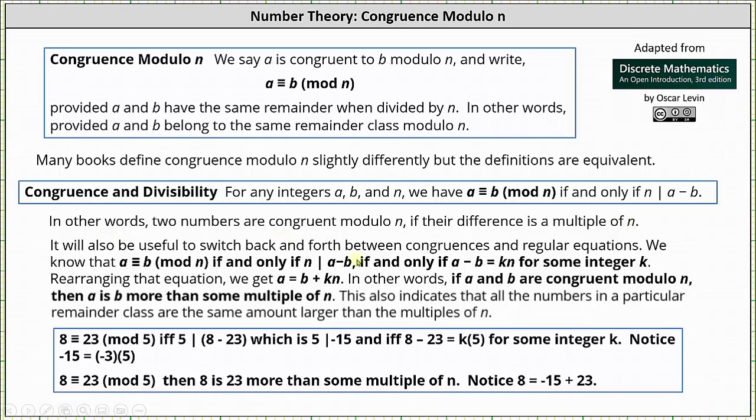It is also useful to switch back and forth between congruences and regular equations. We know that a is congruent to b mod n if and only if n divides a minus b, if and only if a minus b is equal to kn for some integer k. Notice the equation is just stating the difference of a and b is some multiple of n. Rearranging that equation we get a equals b plus k times n. In other words, if a and b are congruent modulo n, then a is b more than some multiple of n. This also indicates that all the numbers in a particular remainder class are the same amount larger than the multiples of n.